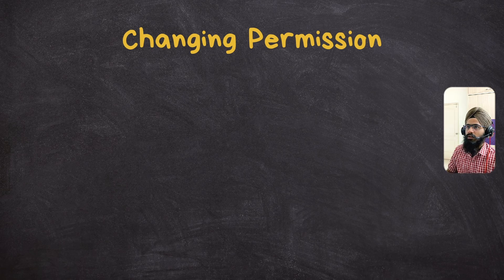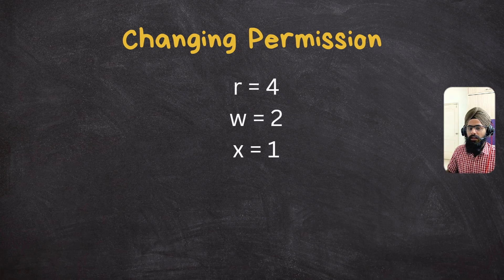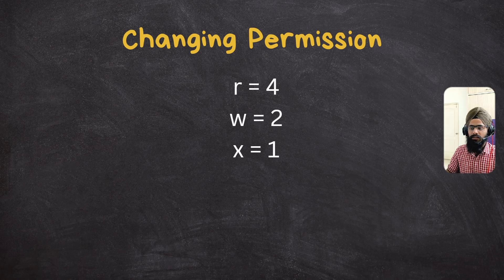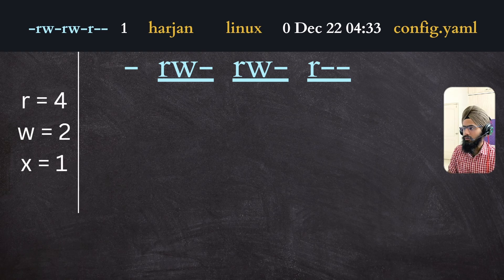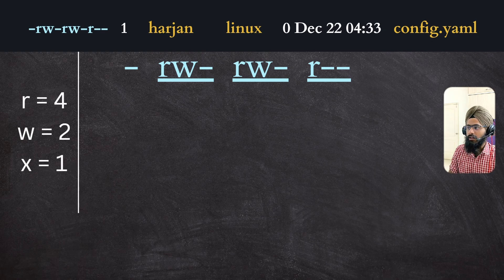If you want to change the read, write, or executable permissions, you need to understand the numbering system in Linux. This is a reserved number system you have to remember: read is 4, write is 2, and executable is 1. For example, if the owner has read and write permission, that is 4+2=6; if others have only read, that is 4. So the number would be 664.